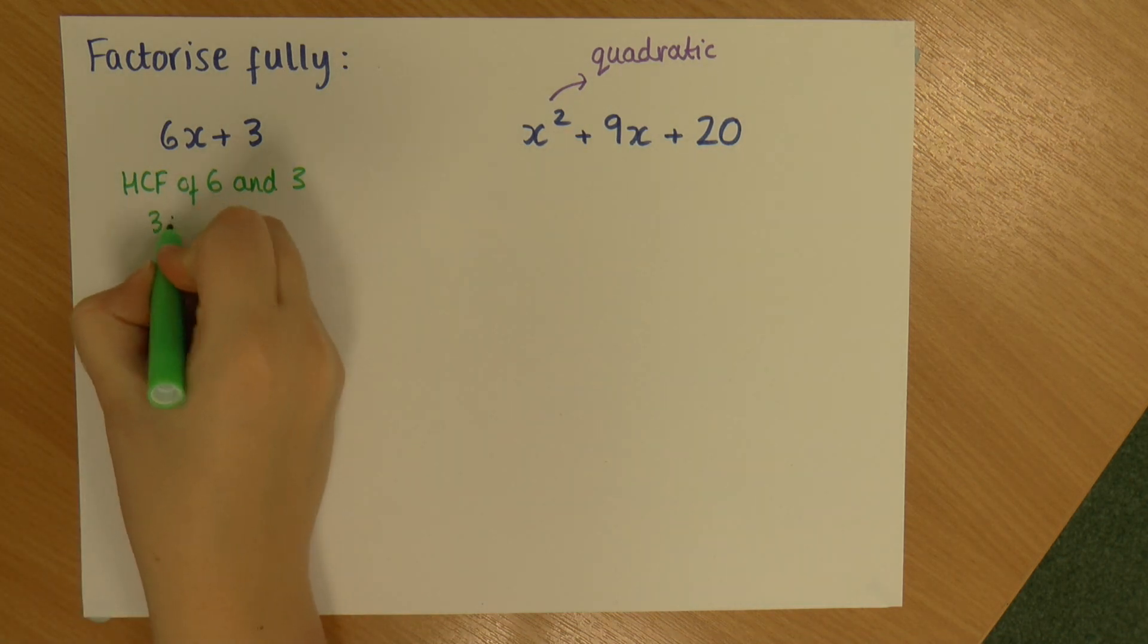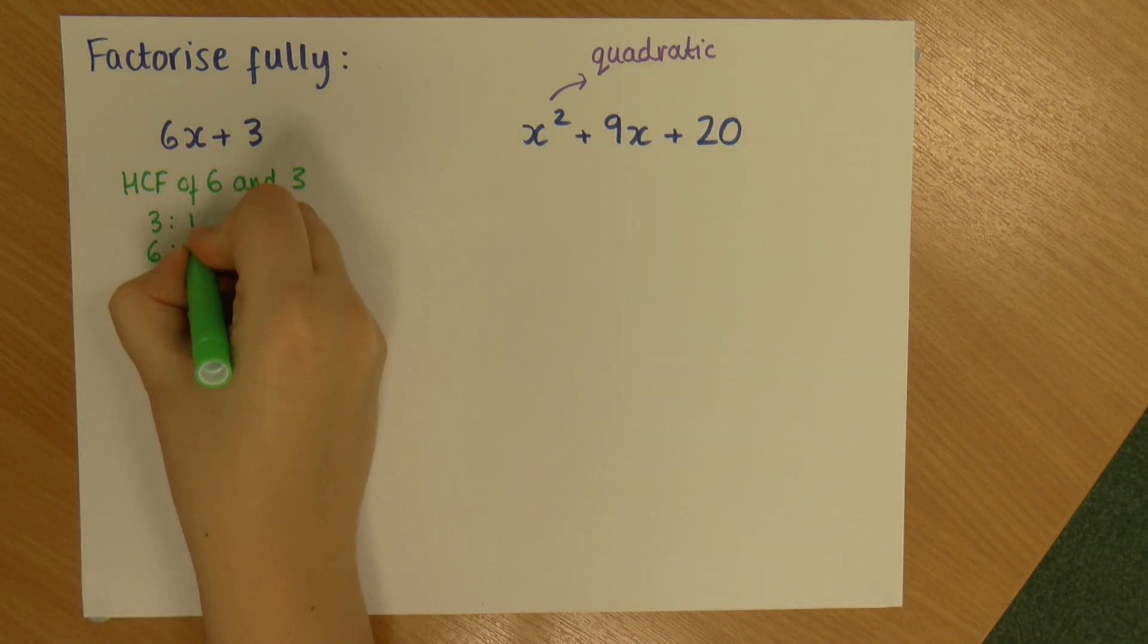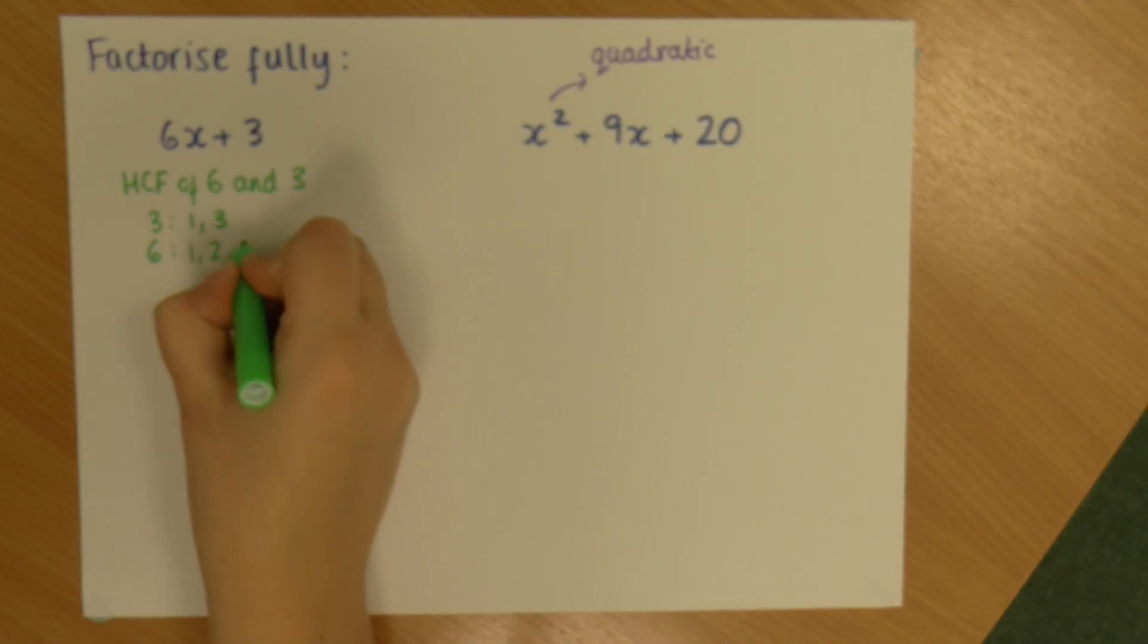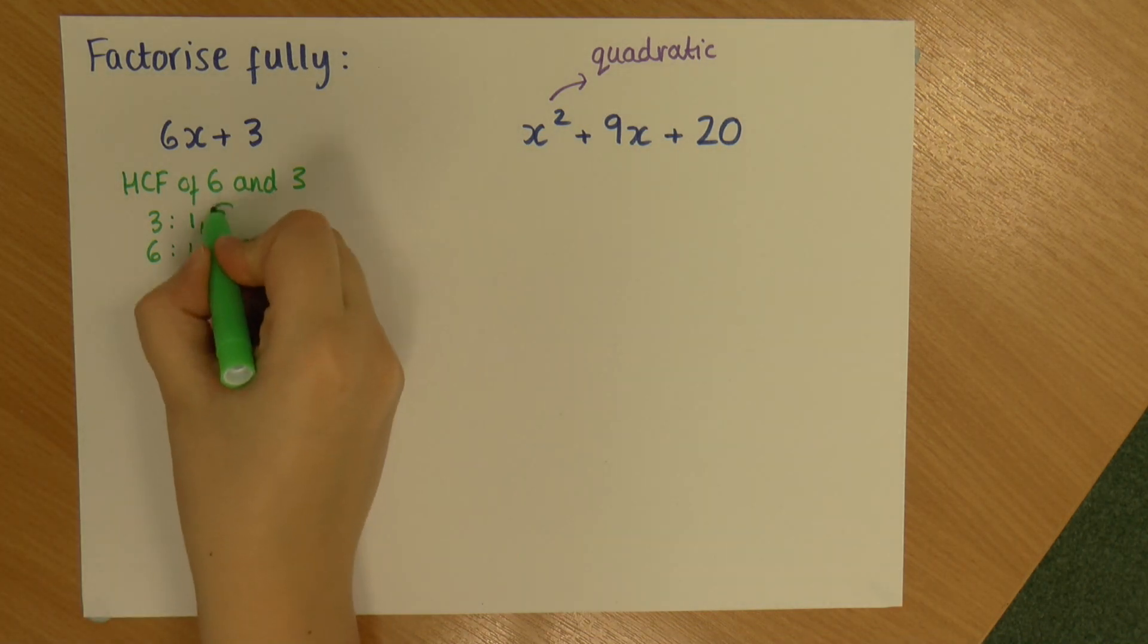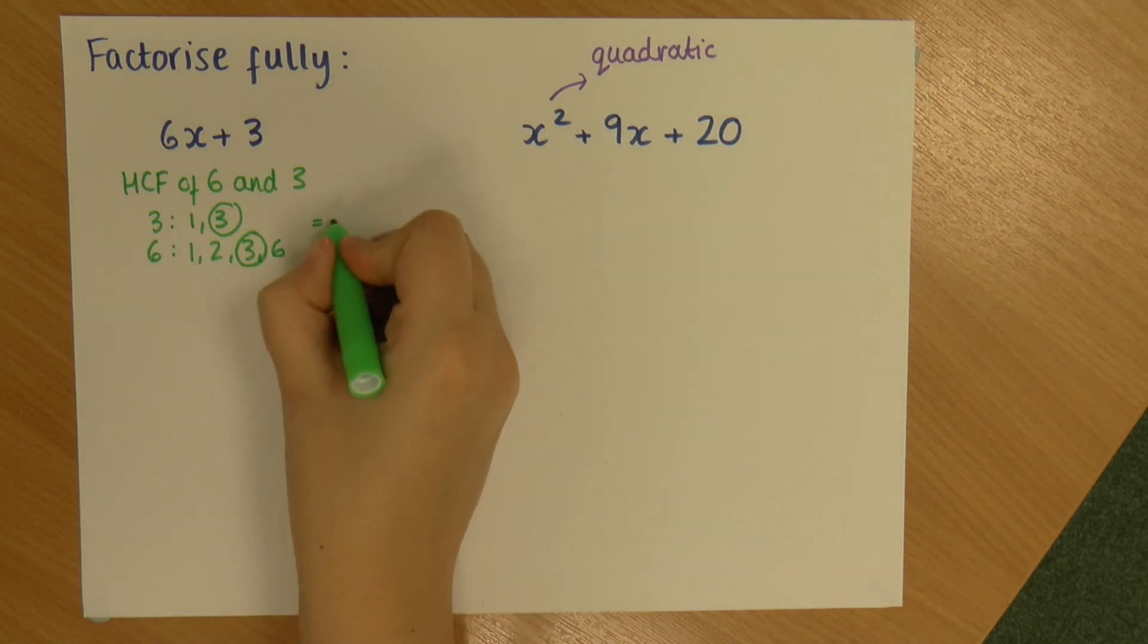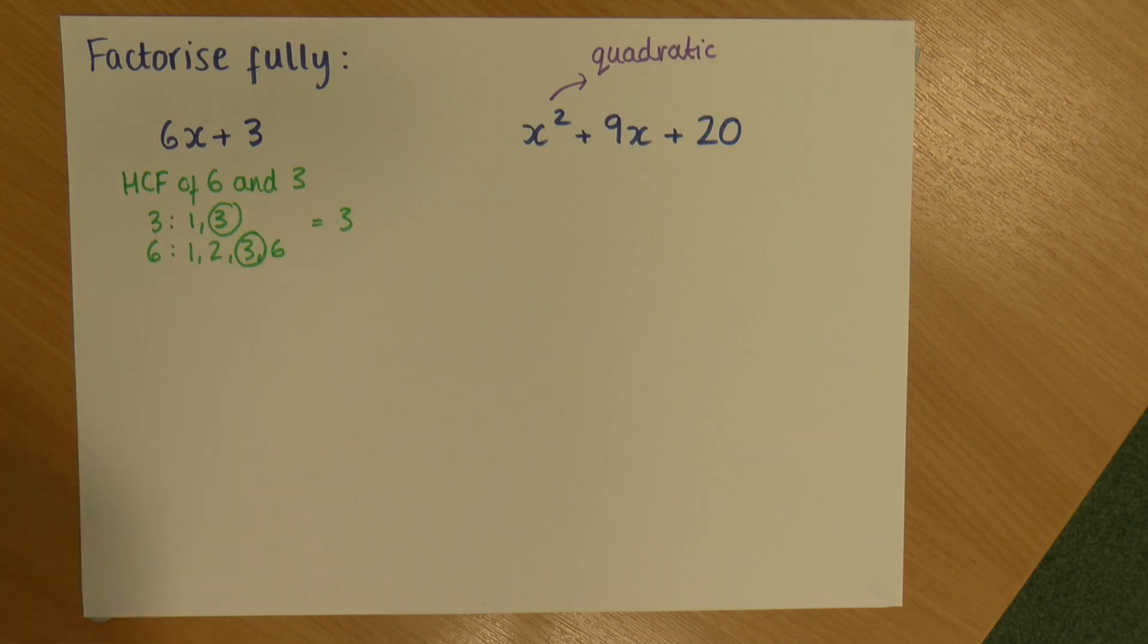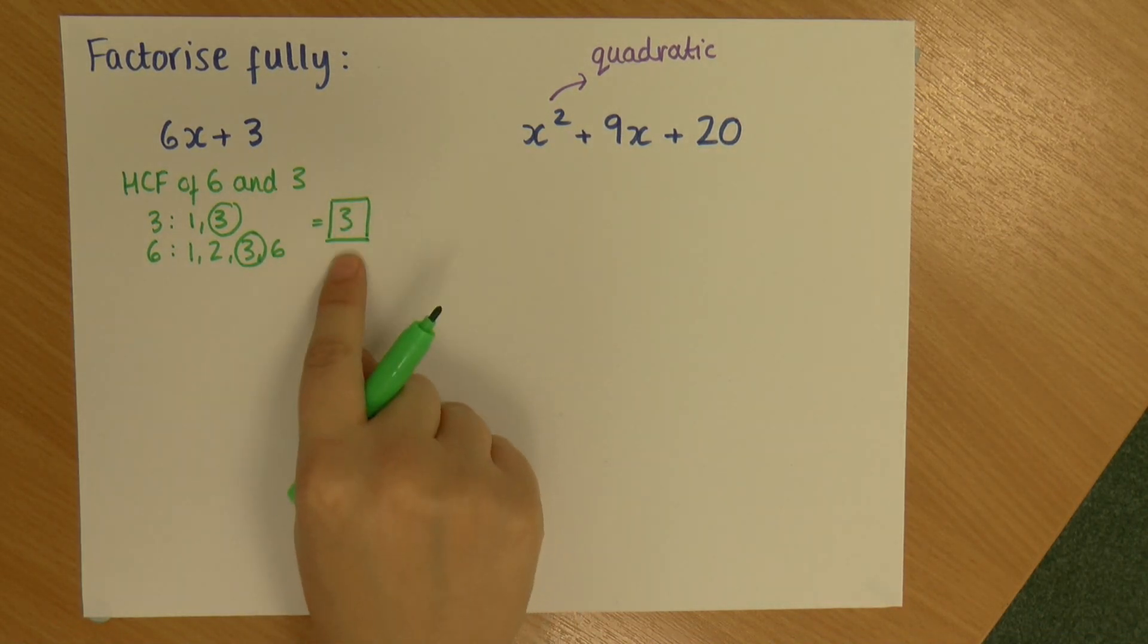But the way we do it is we find the factors of both of these numbers. So the factors of 3 are 1 and 3, and the factors of 6 are 1, 2, 3, and 6. My highest common factor is the highest number in both of those lists which is 3. So 3 is my highest common factor and that is important. I'm going to put a box around that because I'm going to use that in my answer.